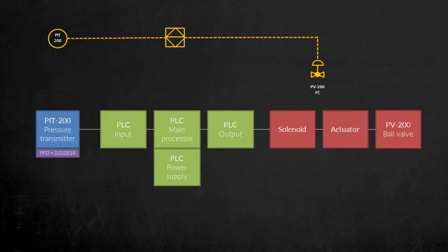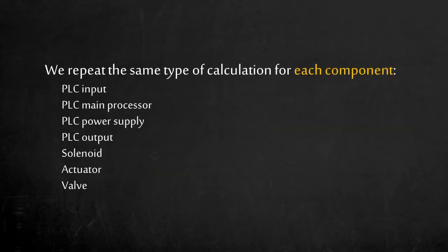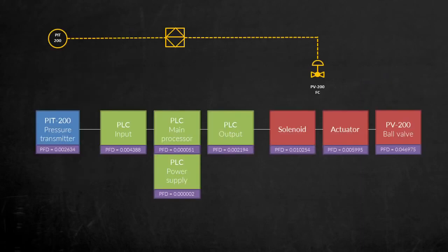Now that we have found how reliable the sensor is, what about the other components? Since we have no redundancy in our safety instrumented function, we can apply the same equation to all other components. After all the calculations are done, we have a list of components and their corresponding probability of failure on demand.